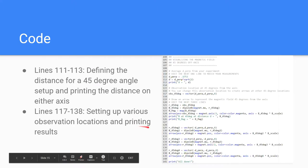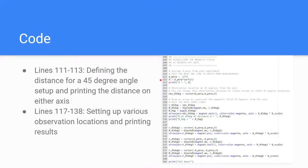And then on lines 111 to 113, we include measurements for the 45 degree angle measurement location. And down here, we create arrows representing the magnetic field at those locations and print those fields.